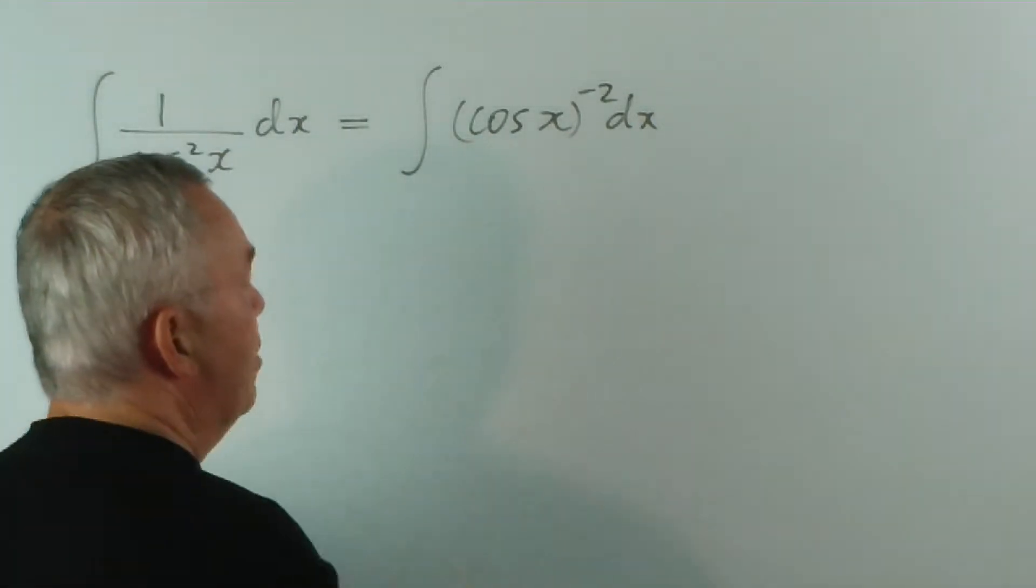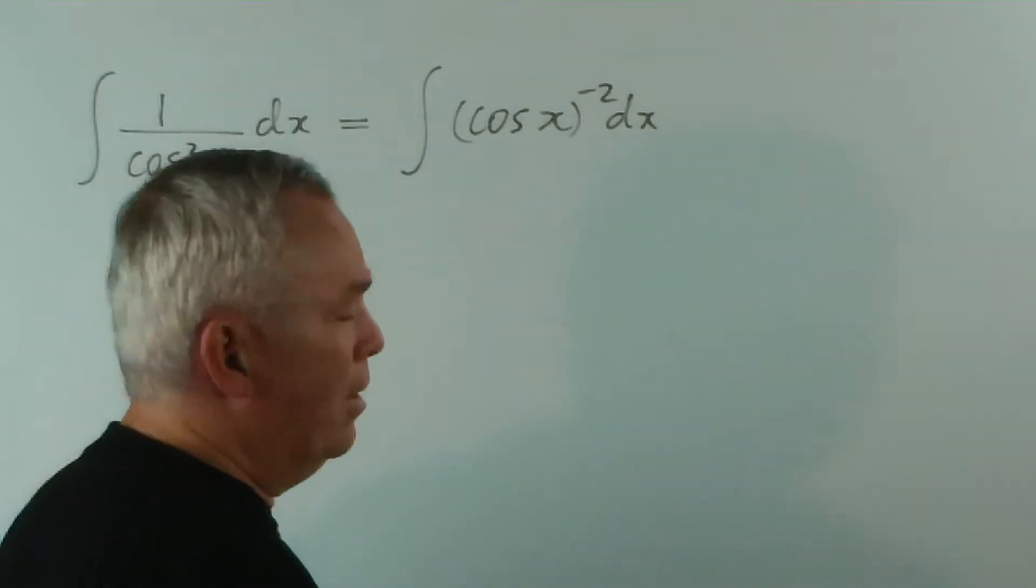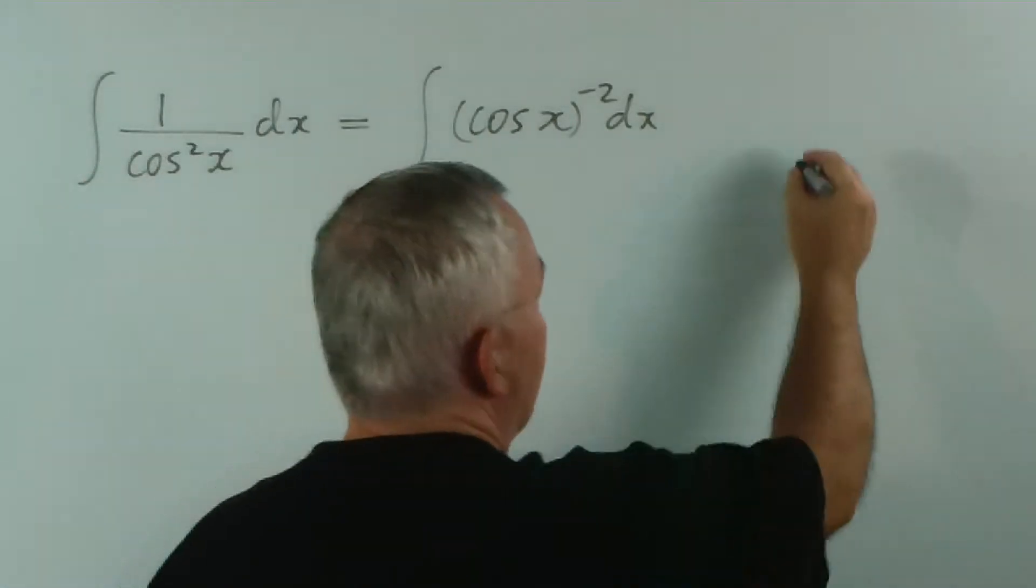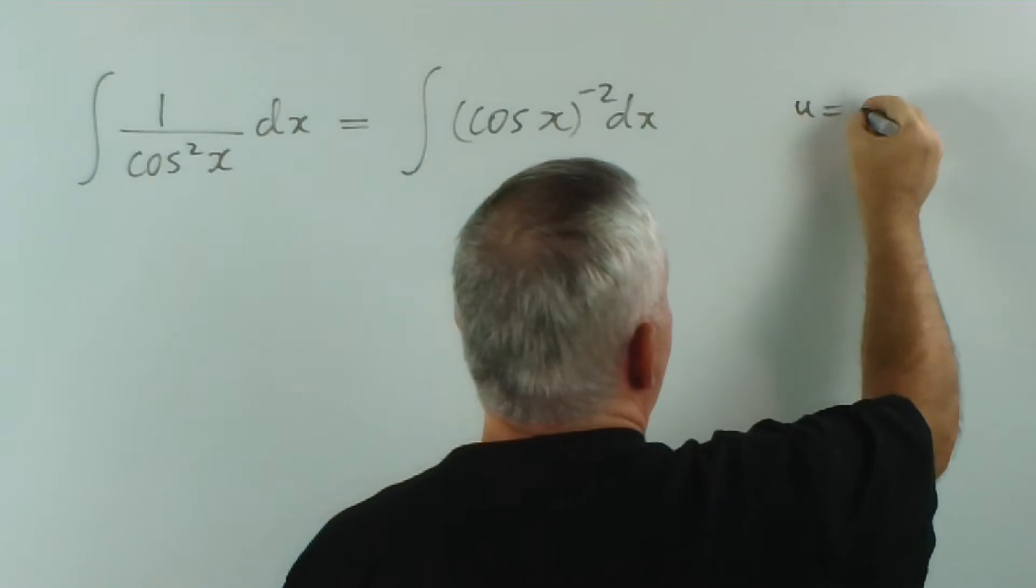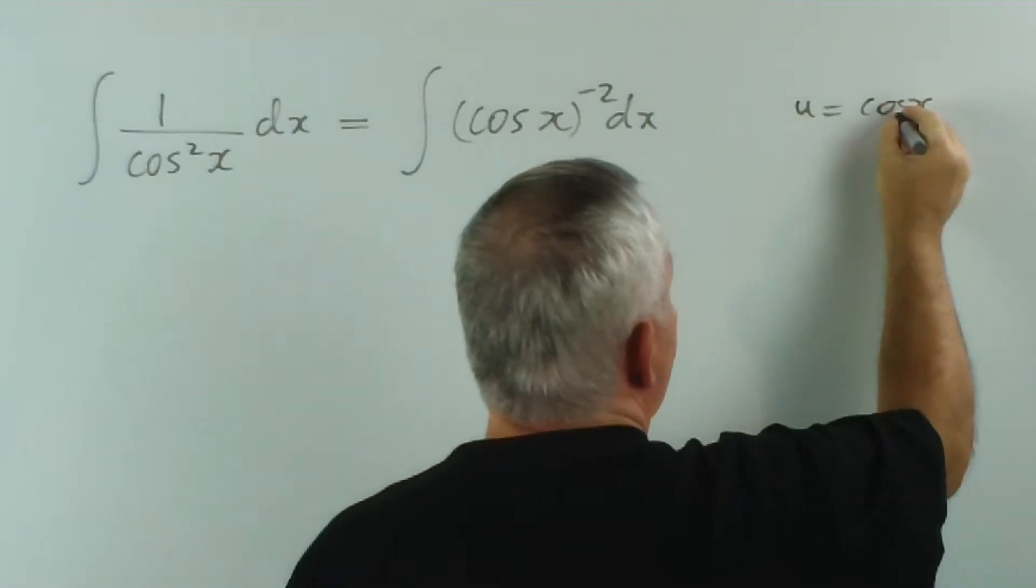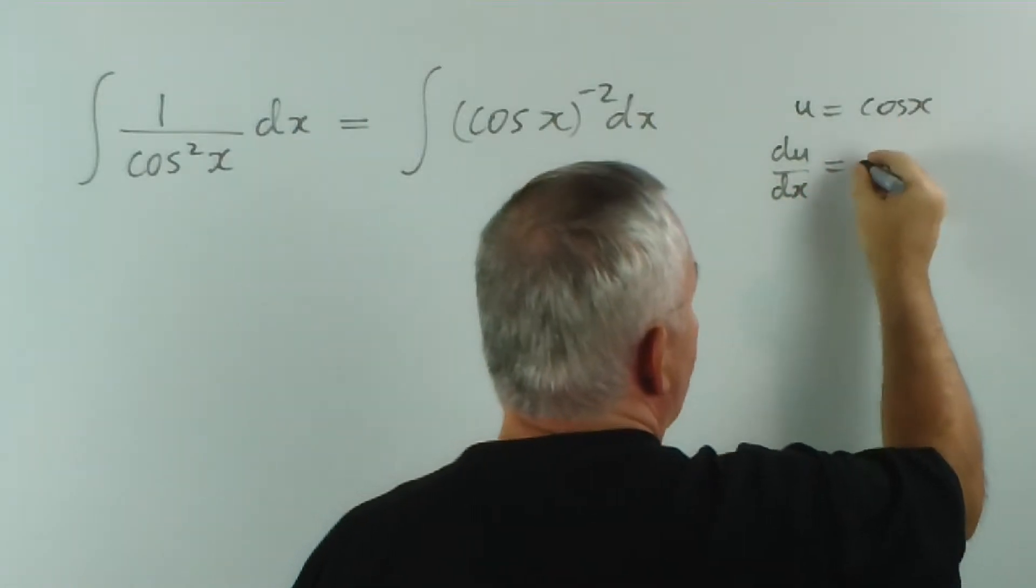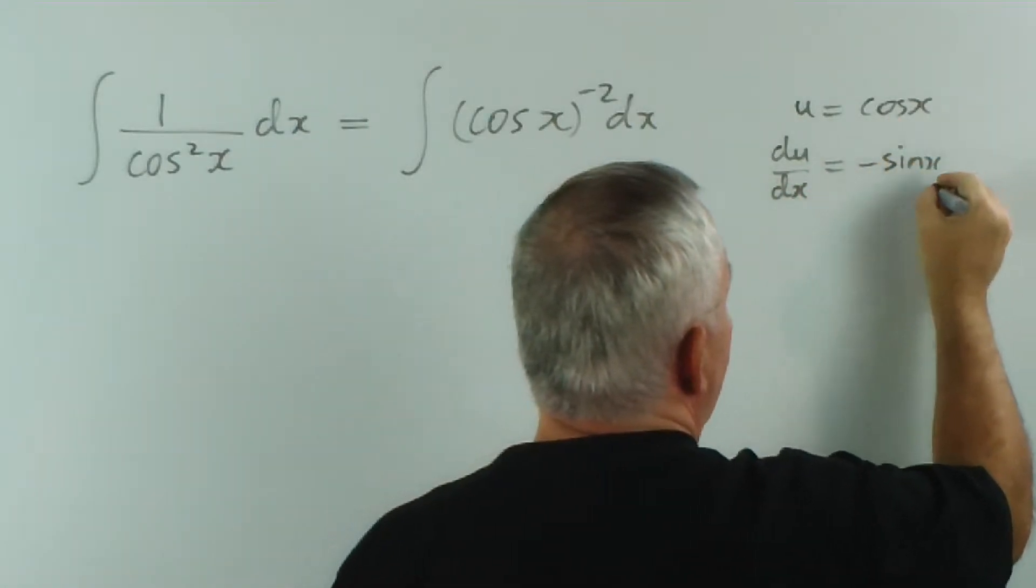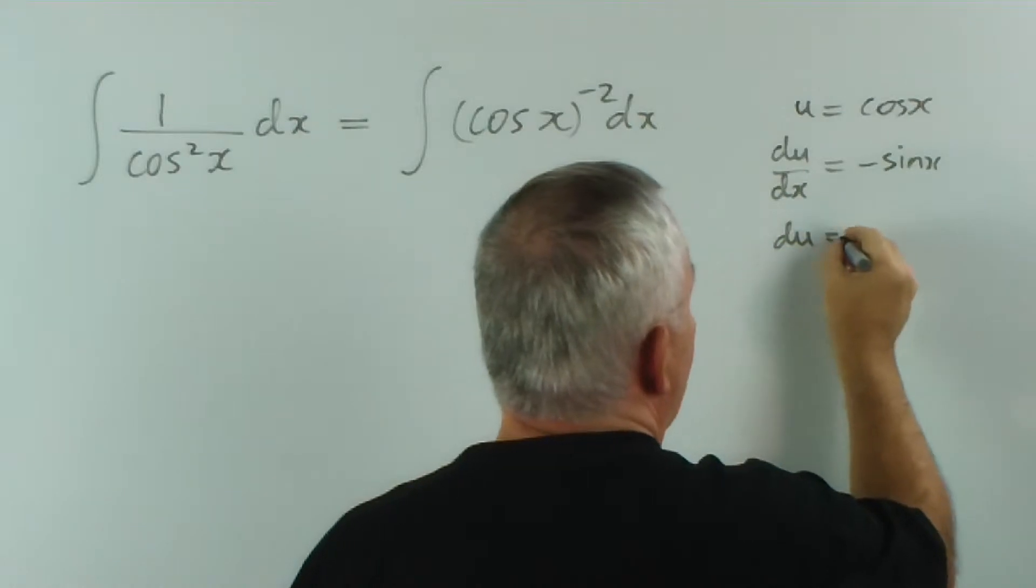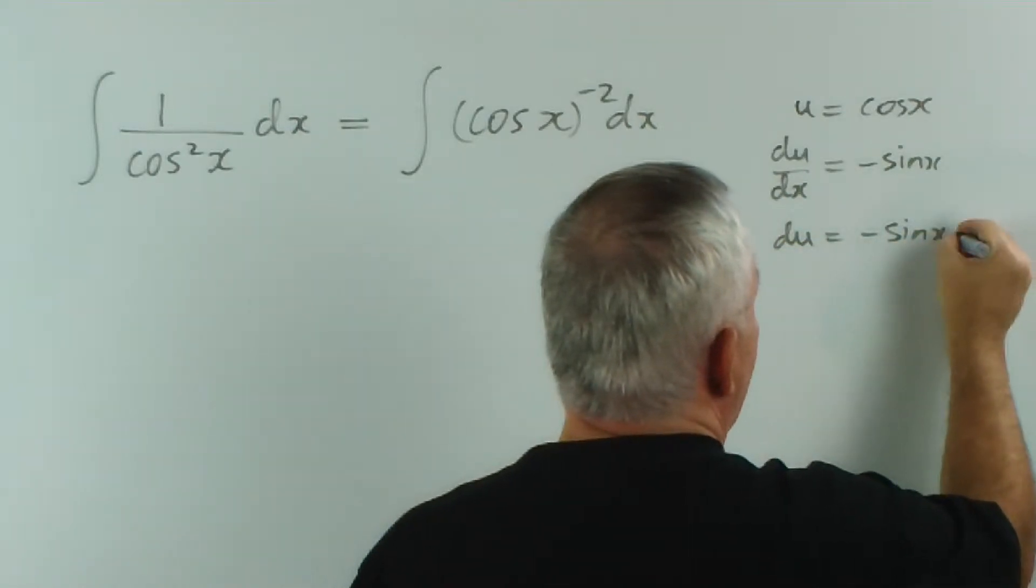They might make a substitution u equals cos x, but it leads to all sorts of problems. So I'll just show you. If u equals cos x, du dx is the derivative of cos, which is minus sin x.